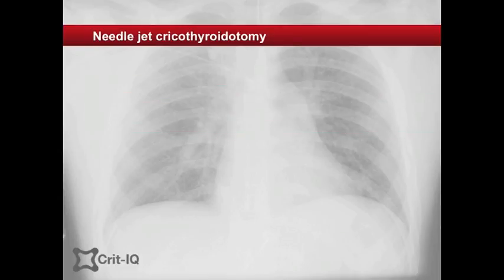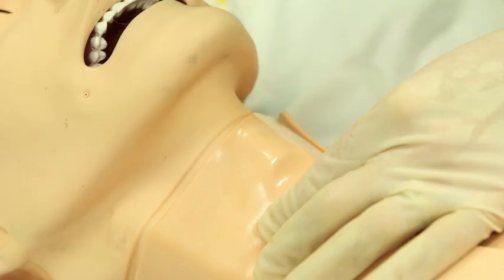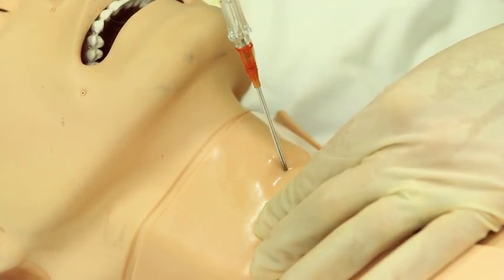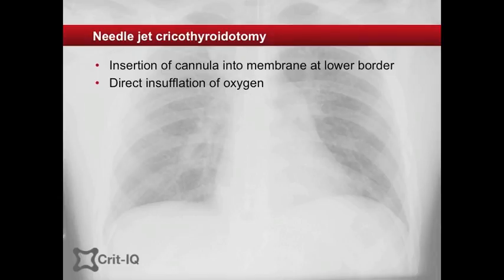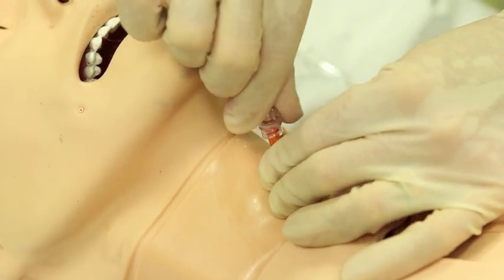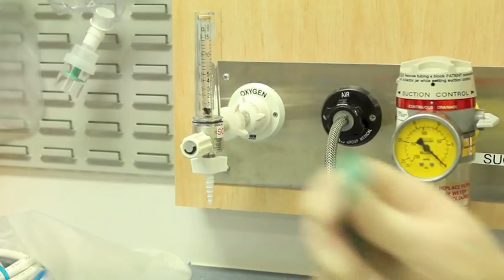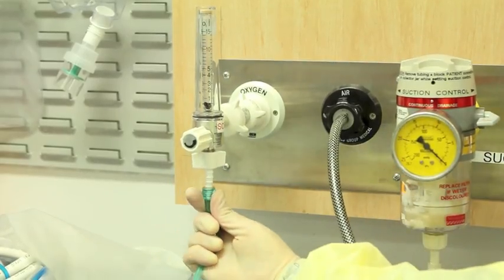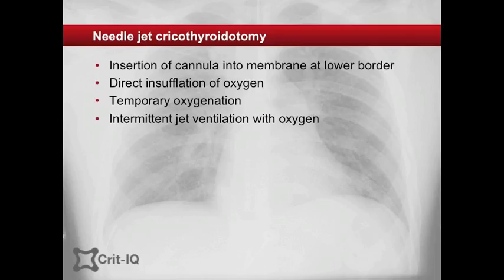Needle cricothyroidotomy involves insertion of the cannula into the airway via the lower border of the cricothyroid membrane. This is thought to allow insufflation of oxygen directly into the airway with the intention of maintaining oxygenation while an alternative means of securing the airway is obtained. Once inserted, the cannula is attached to high flow oxygen. Moderately high gas pressures are required to overcome the resistance of such a small tube. To avoid hyperinflation, a device designed to allow intermittent inflation is required so that a period of exhalation may occur.